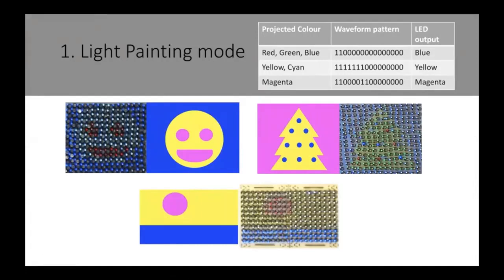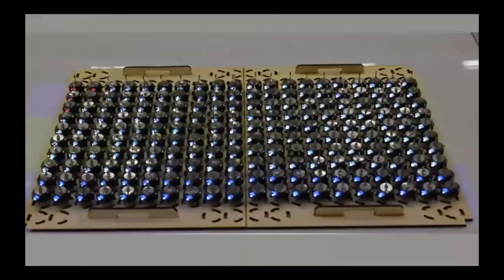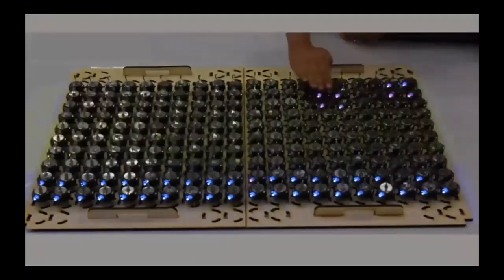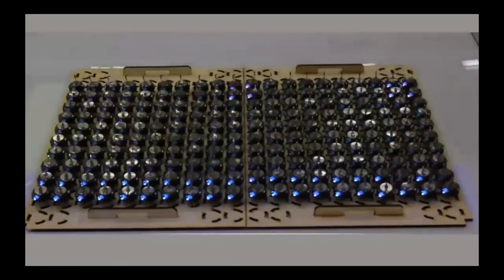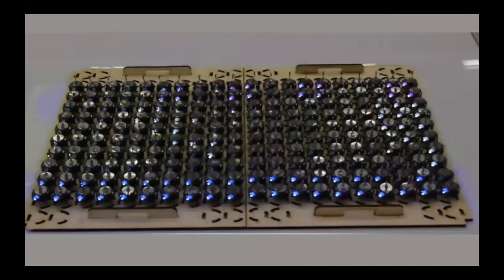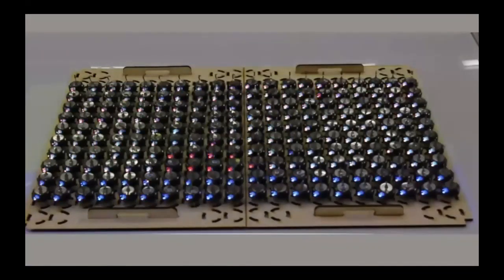Before I talk about the rest of the painting modes, I'd like to show a performance we did with them. Here's a quick overview: there is a sunset on an ocean, then night arrives, stars begin to show in the night sky, more stars appear, clouds start forming, and finally the sun rises again.